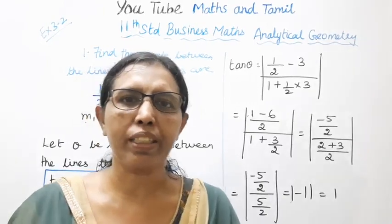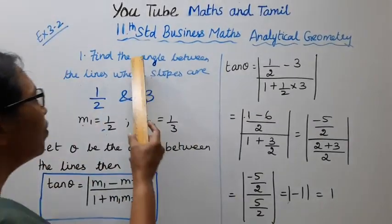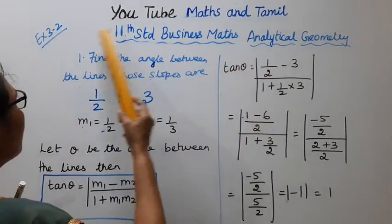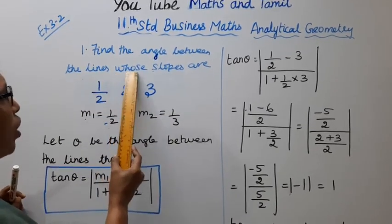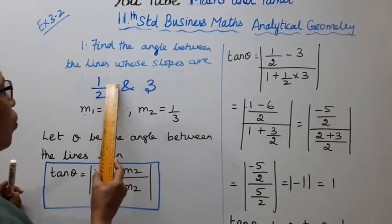Hello students, welcome to MagSan Tamil Channel. 11th Standard Business Maths Analytical Geometry Exercise 3.2. Find the angle between the lines whose slopes are 1 by 2 and 3.